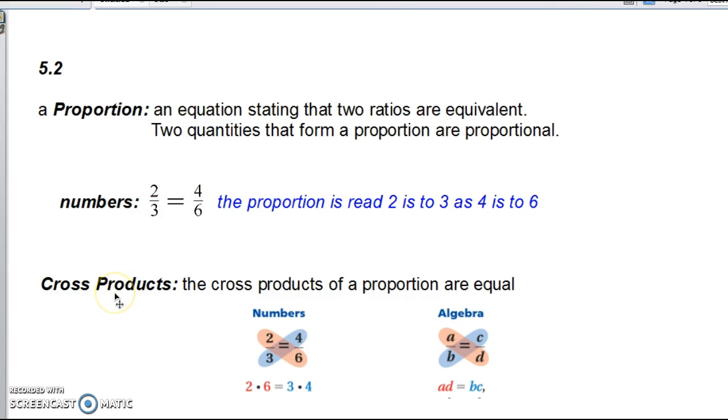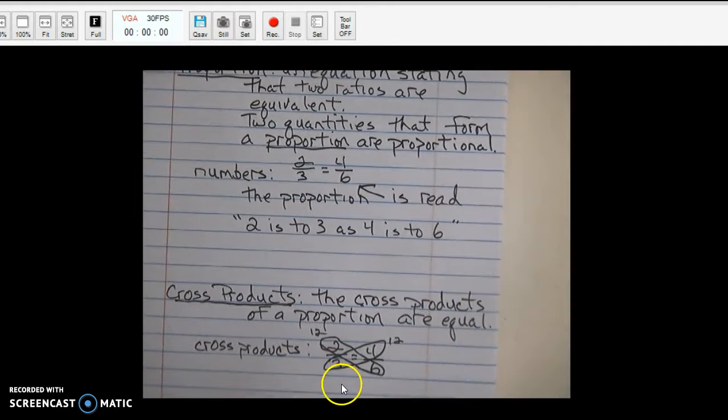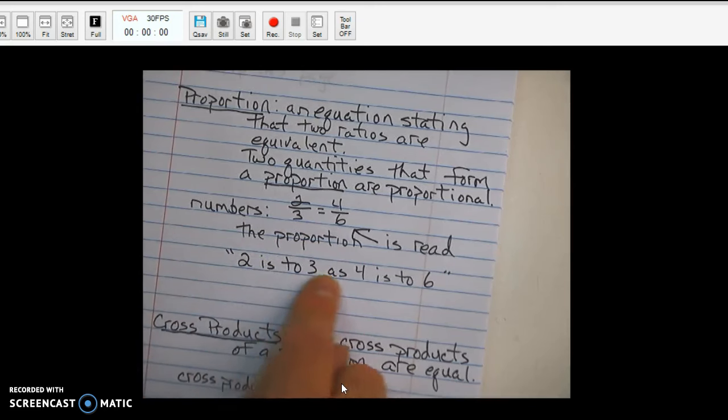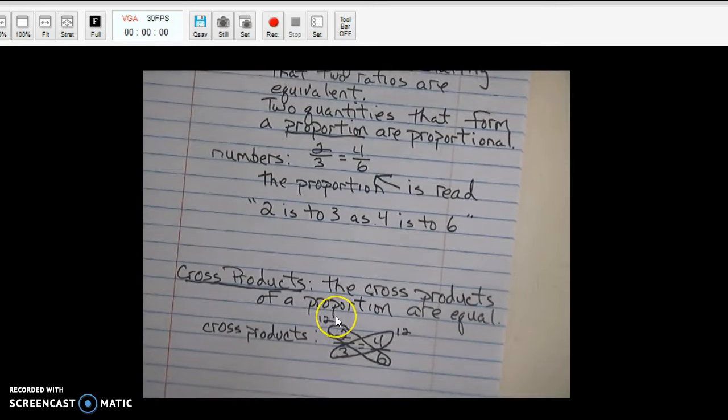Cross products. Cross products. It's an easy way to check to see if two ratios are equivalent. The cross products of a proportion are equal. This number again. 2 over 3, 4 over 6. 2 times 6 is 12. 3 times 4 is 12. When that happens, they are proportional. Okay. I'm going to flip back to my notebook. There it is. Proportion. How it looks in numbers. And the cross products.